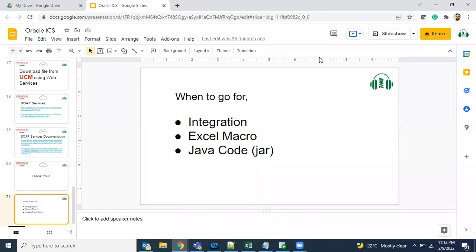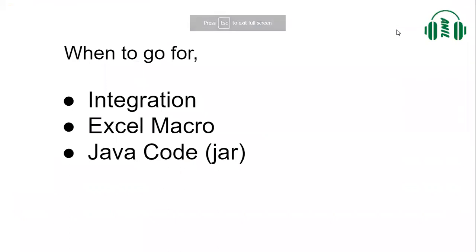When the customer wants to build an integration but does not have a licensed integration tool, we go for writing Java code. We export it as a runnable JAR file and then schedule it. If using a Windows server, we schedule it in Task Scheduler. If using Unix or Linux, we can schedule the same JAR file there as well.